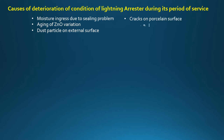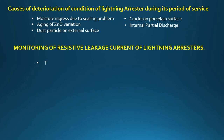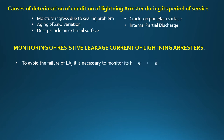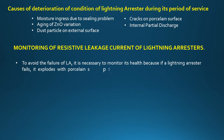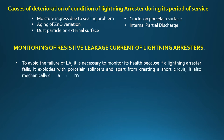Internal partial discharge is another cause of deterioration. To avoid failure of the lightning arrester, it is necessary to monitor its health, because if a lightning arrester fails it explodes with porcelain splinters, and apart from creating a short circuit, it also mechanically damages other nearby equipment.